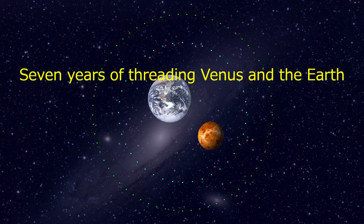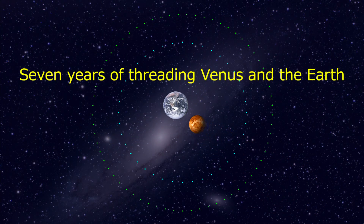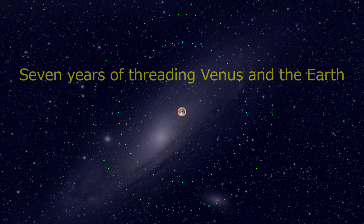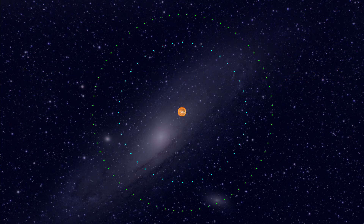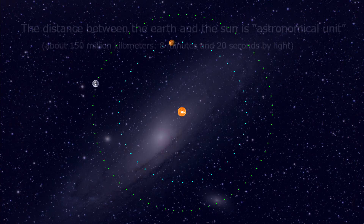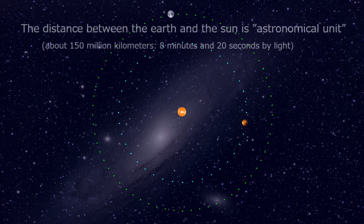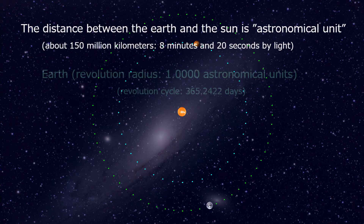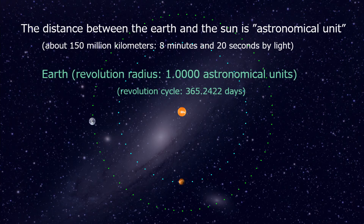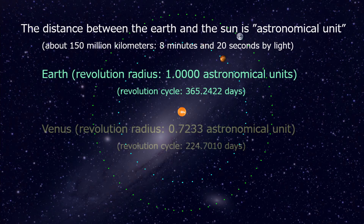7 years of threading Venus and the Earth. The distance between the Earth and the Sun is one astronomical unit. This shows Earth's distance from the Sun over one year, and Venus's distance from the Sun in a year.